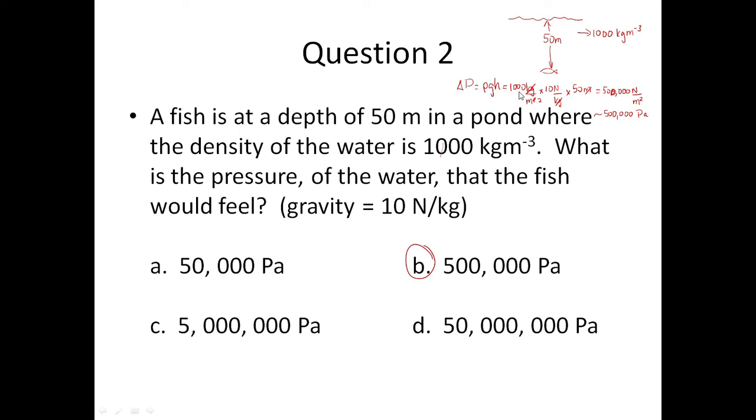Using delta P equals rho g h, you're going to multiply the density of water by gravity given and then by the height between the fish and the level of water. We get 500,000 newtons per meter squared, which translates to 500,000 pascals.